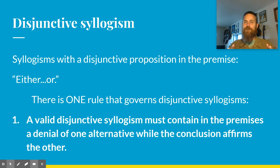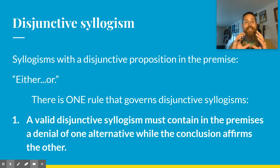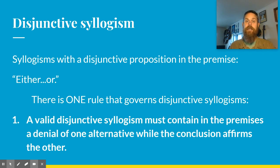We're going to look at some tricky disjunctive syllogisms — I'll give you a tricky one when we come back to class. But always apply that rule: if you don't, you can be fooled by the terms. If you apply the rule — denial in one of the premises, affirmative of the other in the conclusion — you'll always be able to tell whether it is valid or invalid.